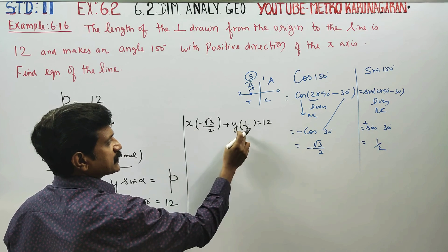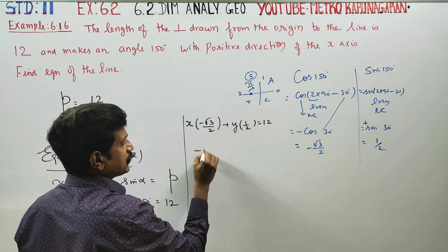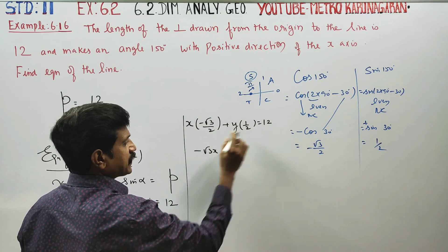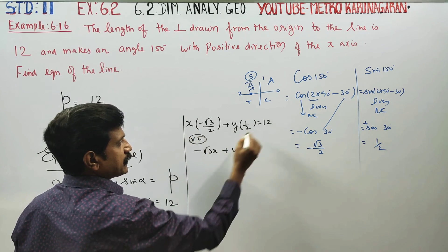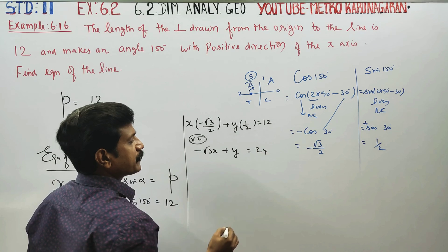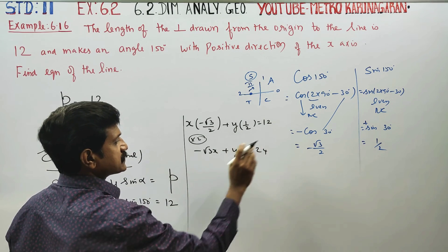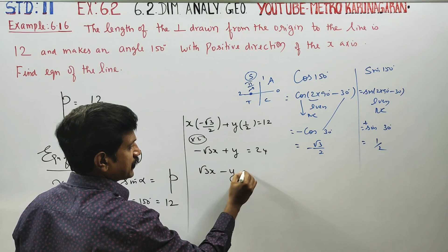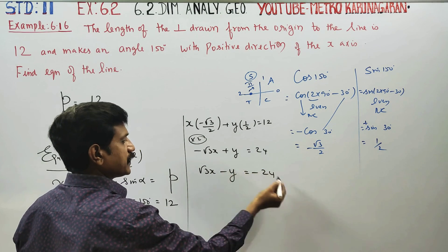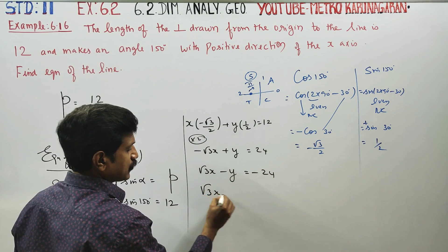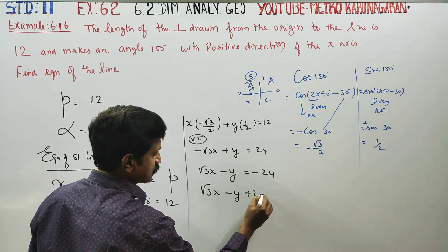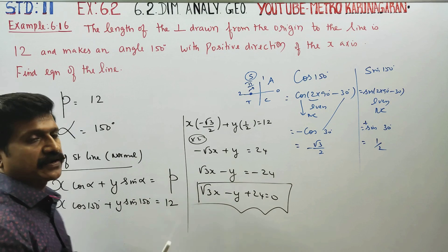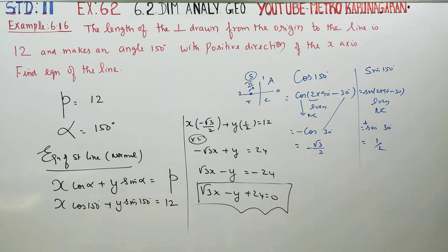Multiply through by 2 — 2 cancels — giving minus root 3 x plus y equals 24. Therefore minus root 3 x minus y plus 24 is equal to 0. This is the required equation of the straight line. Thank you.